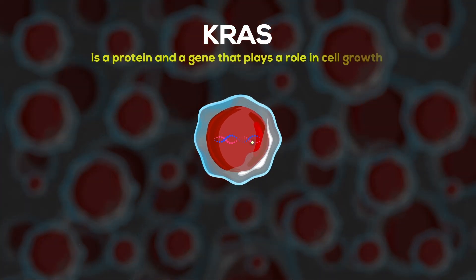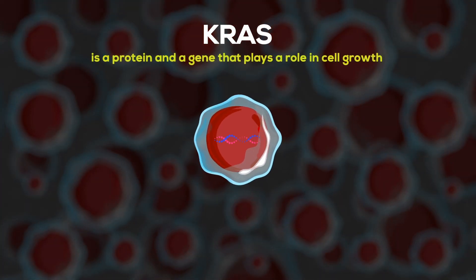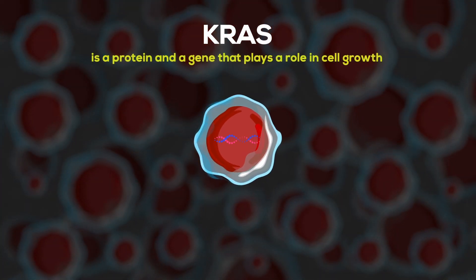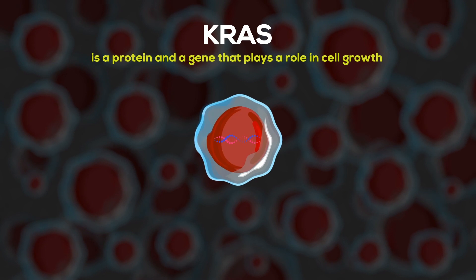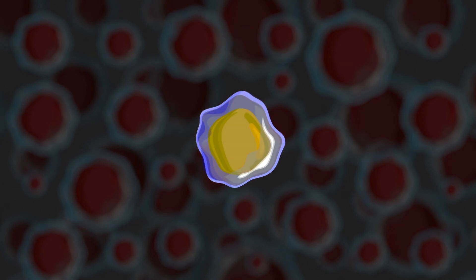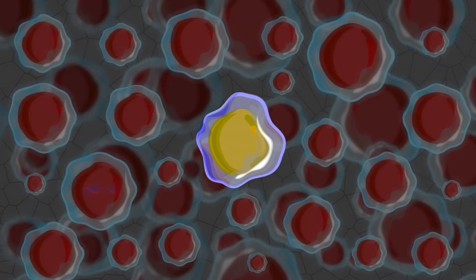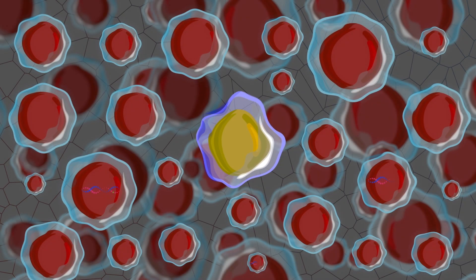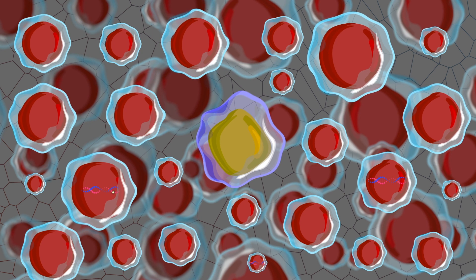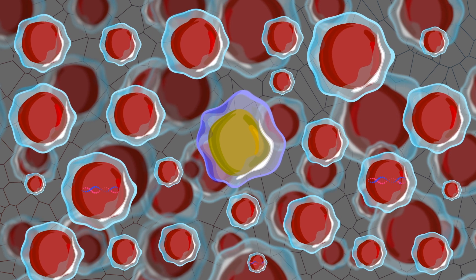KRAS is a protein and a gene that plays a role in cell growth. Sometimes KRAS can change. This is called a KRAS mutation.